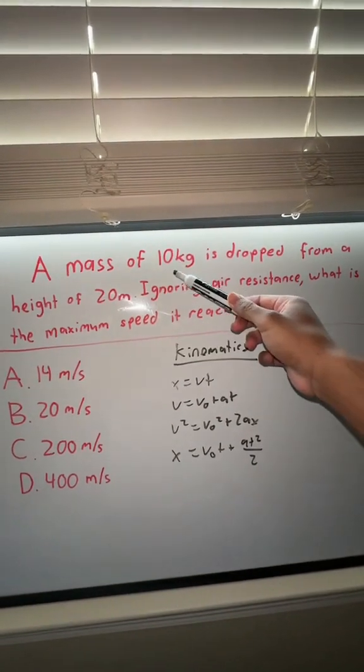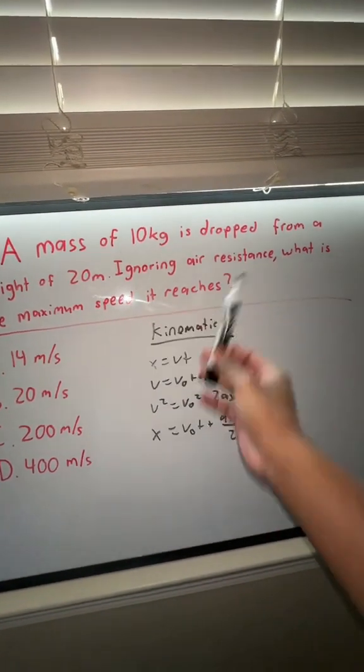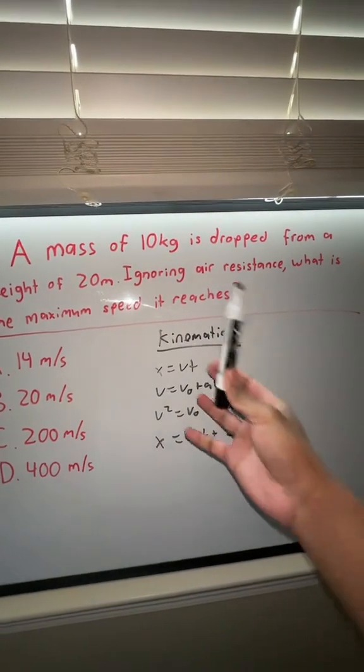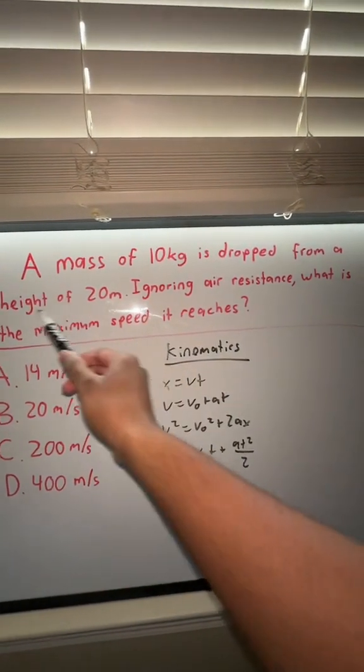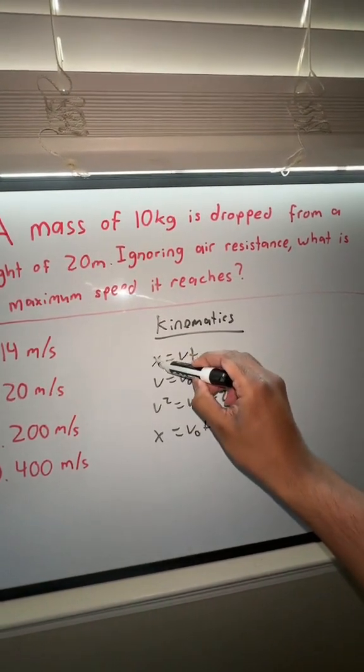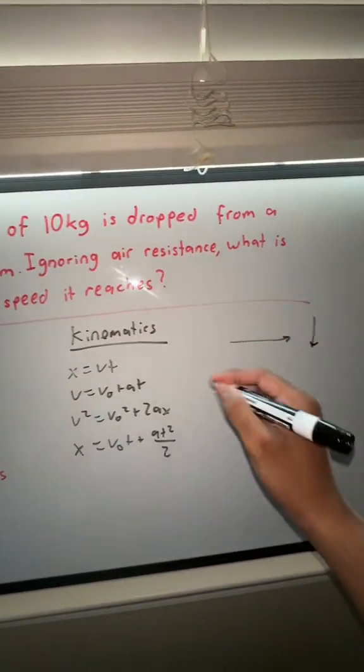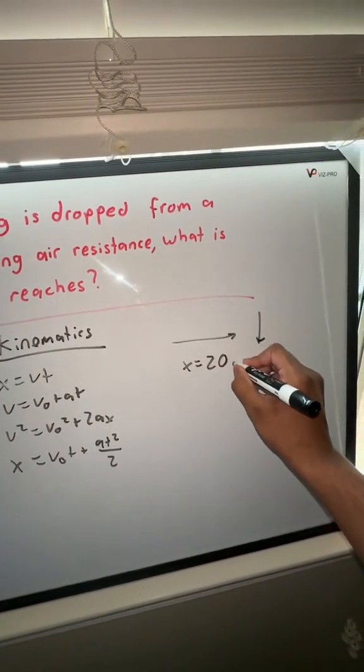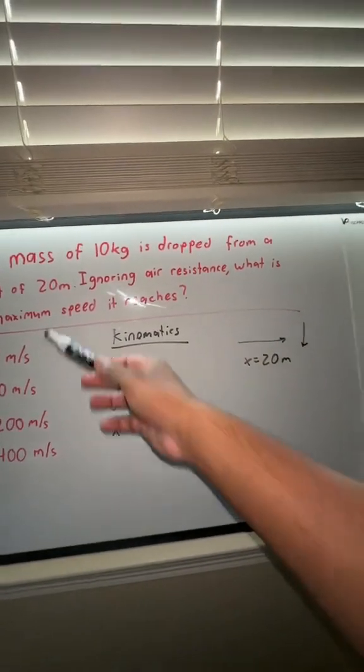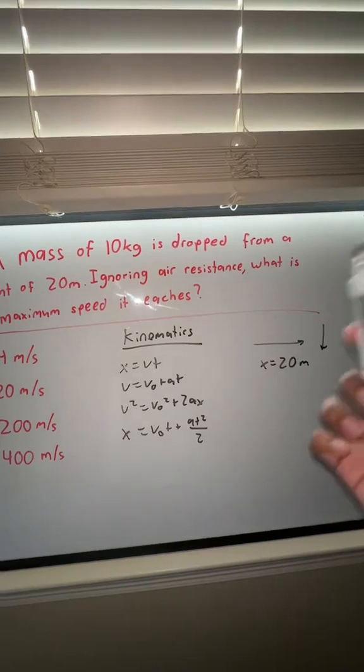Look at what we're given. We're given the mass, but mass is kind of irrelevant—that's just to trick you. It's not going to affect anything here. But we have the height, 20 meters. The height is the same as x; x just refers to distance. So x is going to be one of our variables, we have 20 meters. That's all we're given.